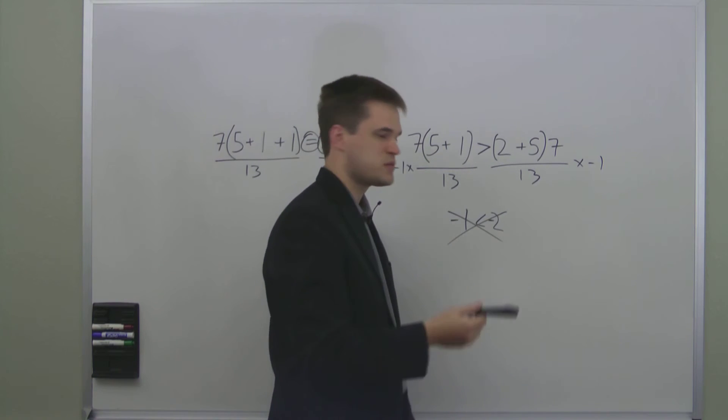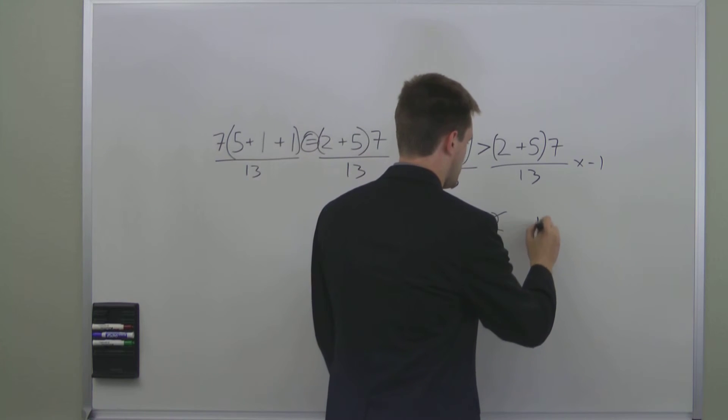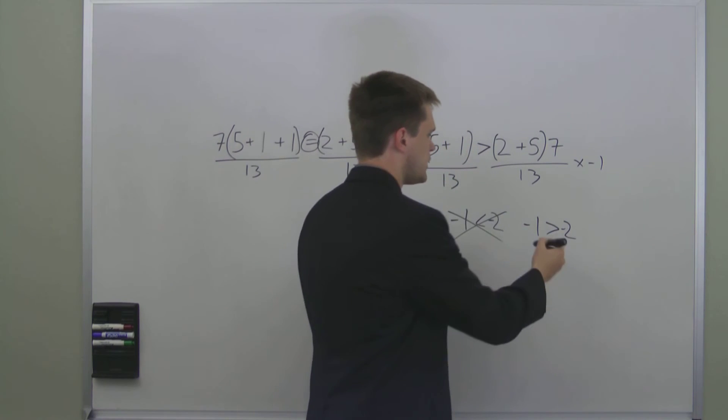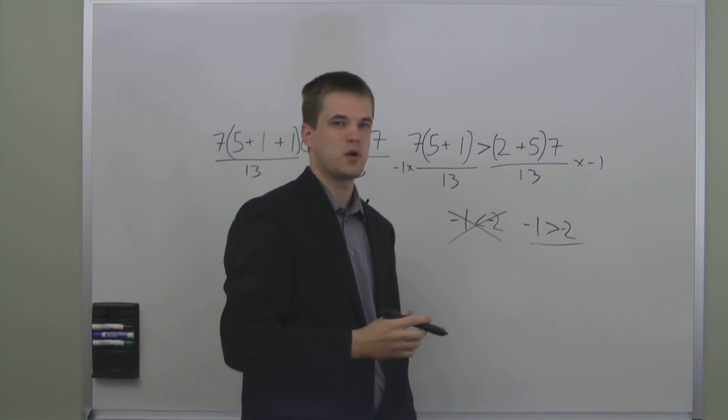To show in real simple terms what that looks like, if you have 1 is less than 2 and then you want to make it negative, you can say negative 1 now is greater than negative 2. And that is the true expression of the inequality.